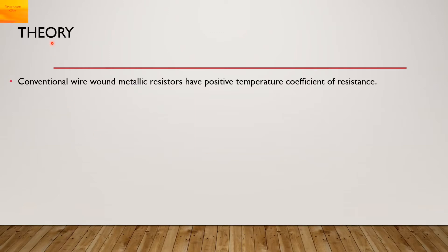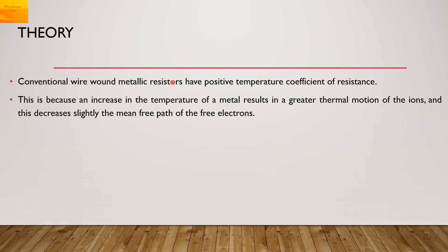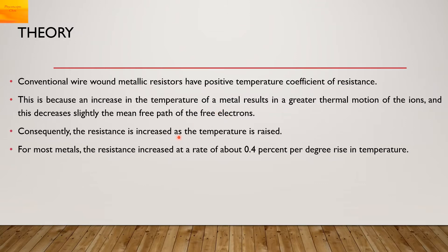If we talk about metallic resistors, they have a positive temperature coefficient of resistance — that is, when you increase the temperature of the metal, it increases its resistance. For most metals, the resistance increases at a rate of about 0.4% per degree rise in temperature.